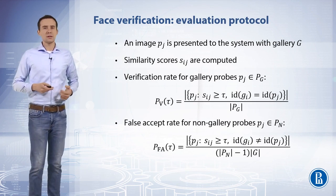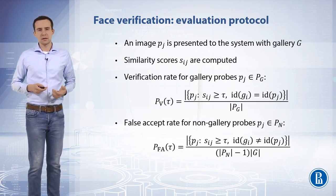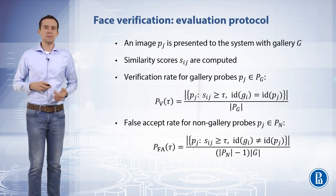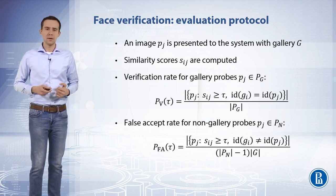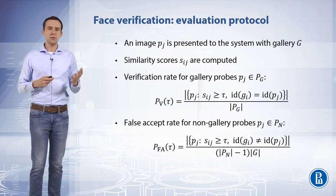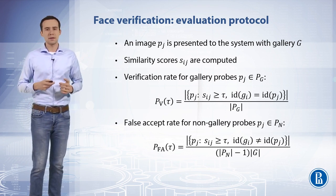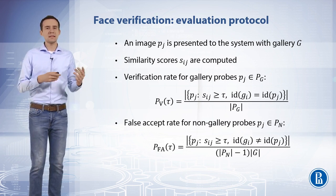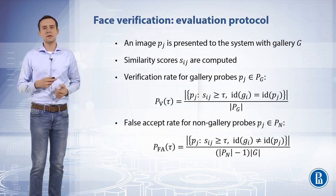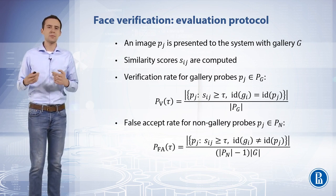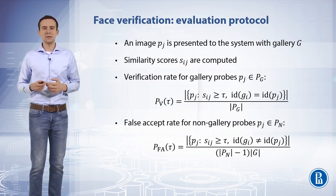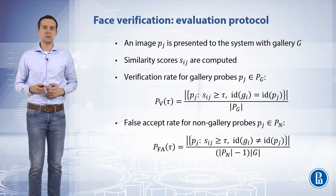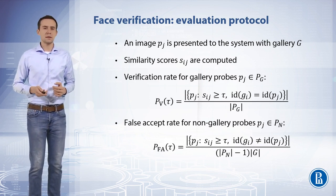In a typical verification task, a person presents his facial image to a system and claims to be a specific person in the system's gallery. The presented image is a probe. The system then compares the probe with the stored facial shots of people in the gallery, producing a similarity score. The system accepts the identity claim if the similarity score is greater than the system's operating threshold; otherwise the system rejects the claim.